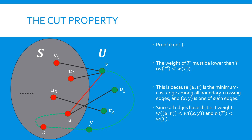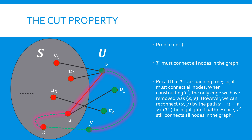Second, to show that T' still connects all nodes, note that the only possible disconnection is between X and Y, since T' no longer contains the edge XY. However, T' can connect X and Y using the path X, U, V, Y, which is highlighted in red in the figure. This path exists because U and X are connected in T, and all the connecting edges are retained in T'. Similarly, Y and V are also connected. And we have included the edge UV in T'. Hence, the path exists to connect X and Y, and T' can still connect all nodes in G.